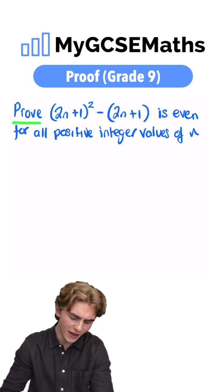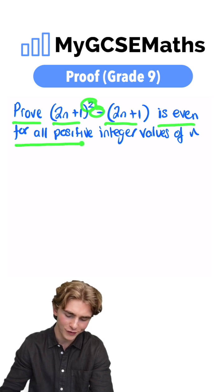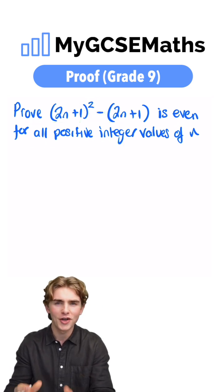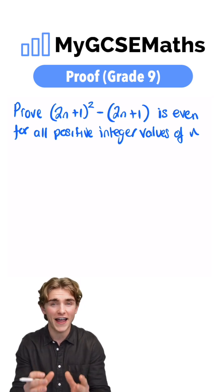This question asks us to prove that 2n plus 1 squared subtract 2n plus 1 is even for all positive integer values of n. We want to show that this is even, so we want to show that it has a factor of 2.